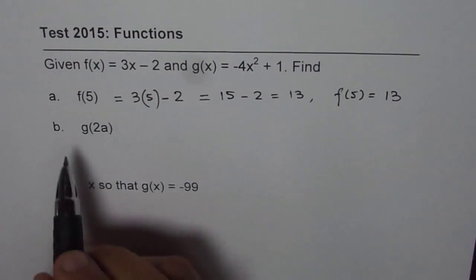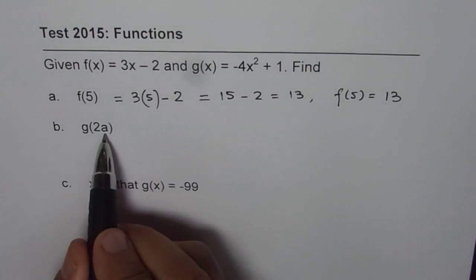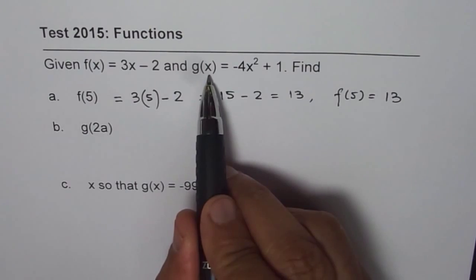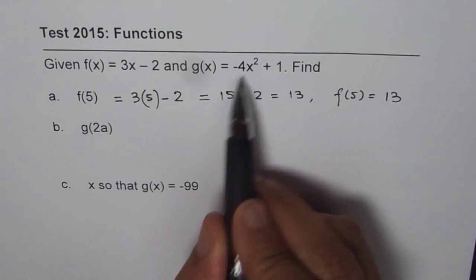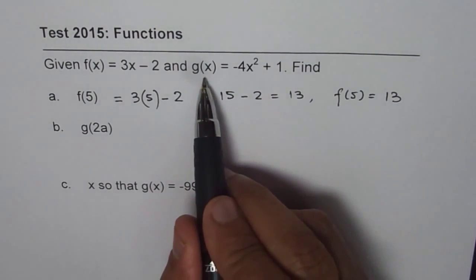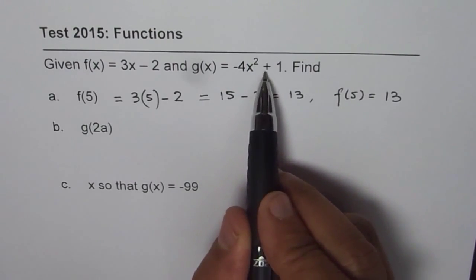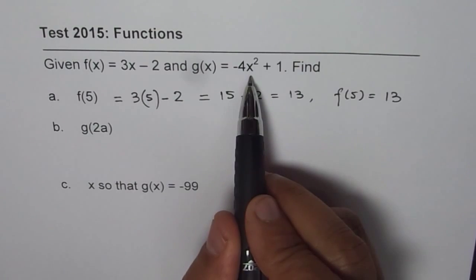So when we say g(2a), that means we have to find an expression for the function g(x) when x is equal to 2a. Now g(x) is equal to -4x² + 1. So in this equation we are going to substitute 2a for x.